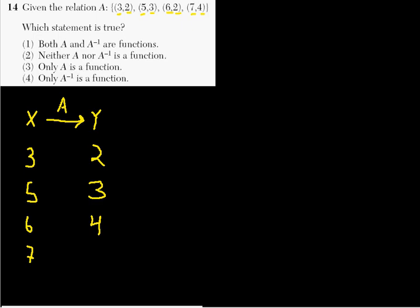Now, the function, we just think of it as lines going from elements of x to elements of y. So 3 maps to 2, like that. 5 maps to 3, like that. 6 maps also to 2. So 6 goes up here to 2. And 7 goes to 4.